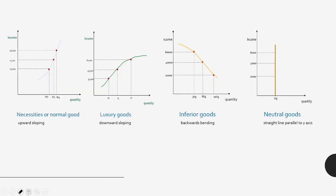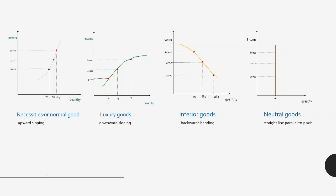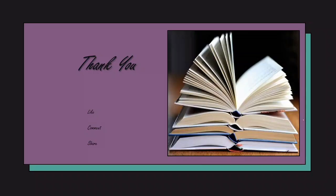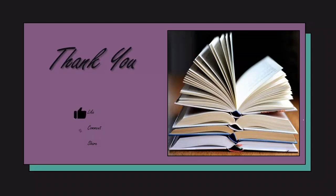To summarize: for normal or necessary goods, the curve is upward sloping with an increasing slope; for luxury goods, it is downward sloping with a declining slope; for inferior goods, it is backward bending with a negative slope; and for neutral goods, it is a straight line parallel to the y-axis. That was your Engel's curve. Thank you for watching the video till the end. If you like the video, do like, comment, share, and subscribe to the channel, and press the notification bell so that you don't miss any update. See you in the next video.